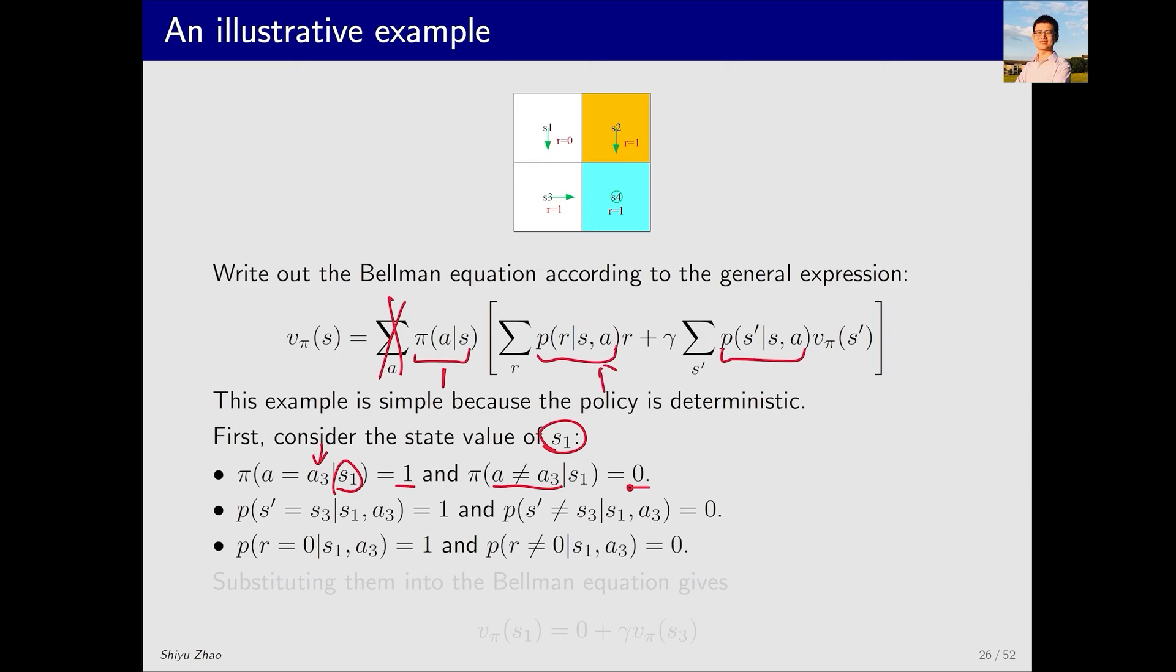Let's look at this term. Starting from S1, I take action A3. The probability of receiving R equal to 0 is 1, and the probability of receiving R not equal to 0 is 0. Therefore, I will definitely receive R equal to 0. Then, when R equals 0, its probability is 1, so this term is actually 0. Moving on, starting from S1, I take action A3. The probability of jumping to S3 is 1, and the probability of not jumping to S3 is 0. Thus, this term is eliminated, and I know that the transition will be to S3. Therefore, this term is 1, and then this is S3. After the above, we know what the Bellman equation is. This is after we have determined the specific expressions for all these terms.